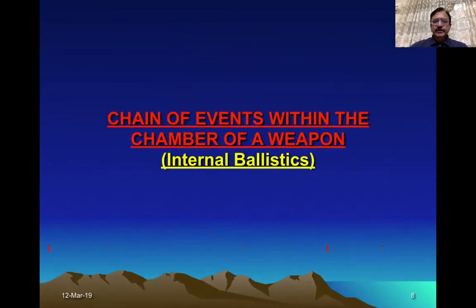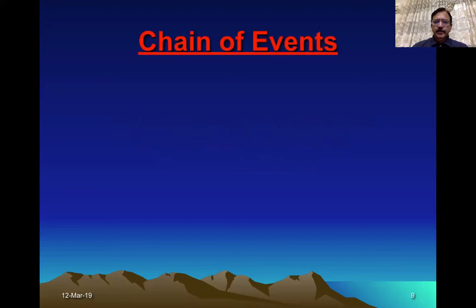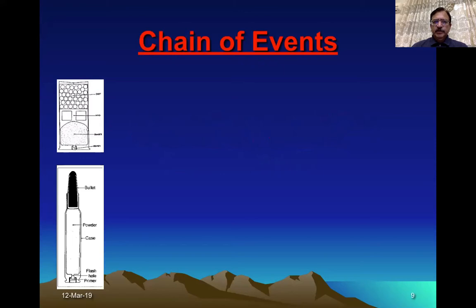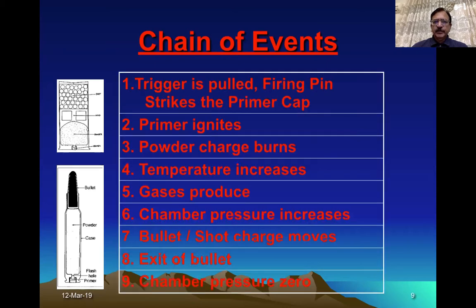Now I'll discuss the first ballistics, that is internal ballistics — what happens within the chamber, the chain of events. The weapon may be smooth bore or rifled. On the left side of your screen, both cartridges are being shown. The lower one is for the rifled weapon and the upper one is for the smooth bore weapon. The lower one has the bullet and the upper one has the pellets.